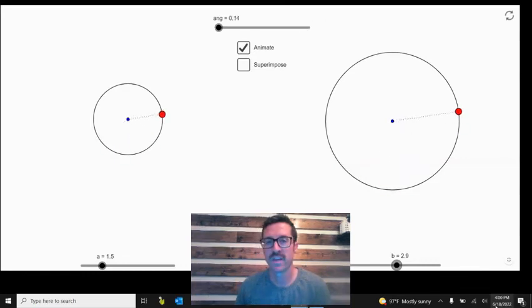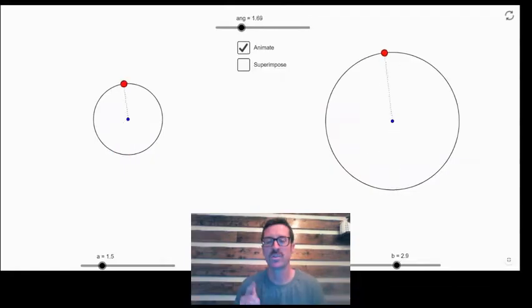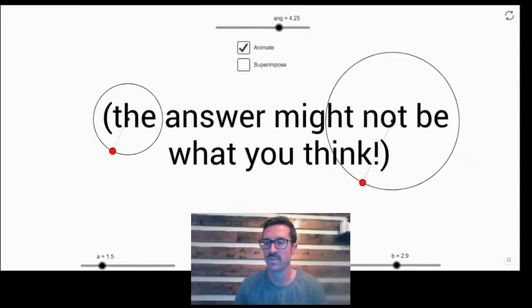Are the points on these two circles traveling at the same velocity, or are they traveling at different velocities? I want you to think about that question. We'll come back to it in just a second.